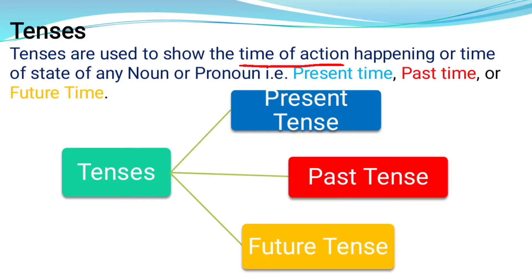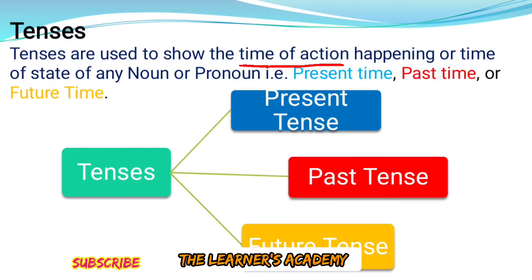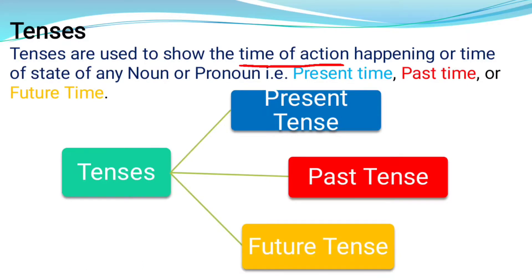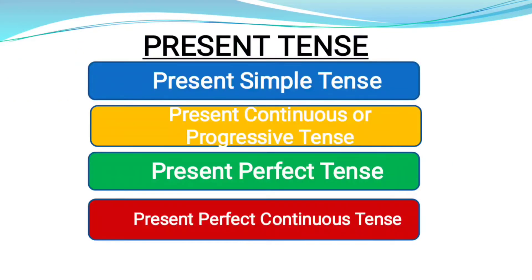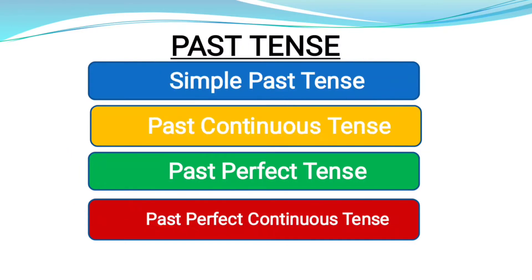The tenses show the formation of time. Tenses are basically of different types: present, past, and future. Present tenses are of four types. Past tense also has four types. The four types of present tense are: simple present, present continuous or progressive tense, present perfect, and present perfect continuous. The four types of past tense are: simple past, past continuous, past perfect, and past perfect continuous.